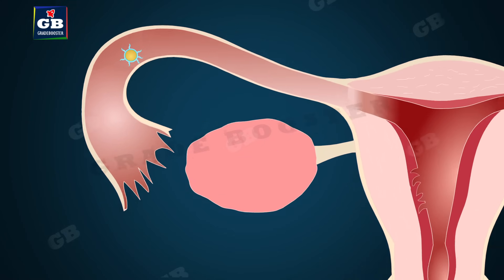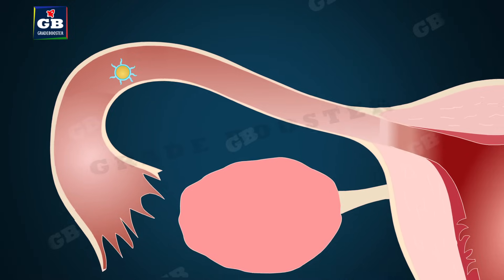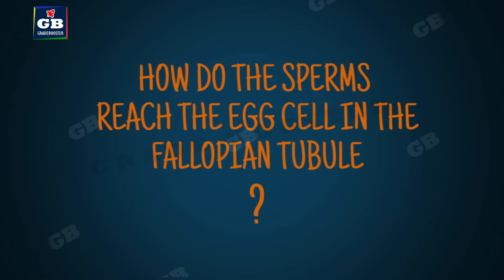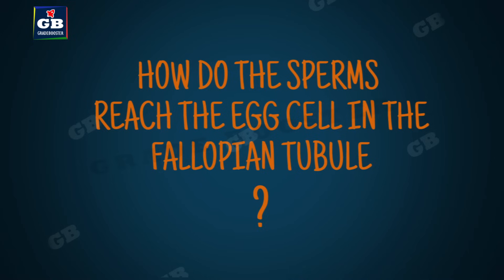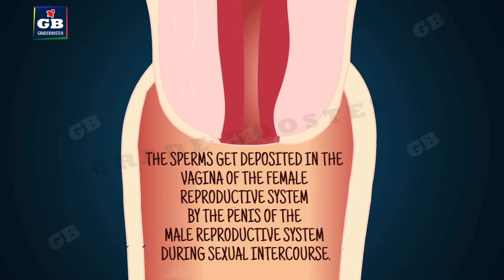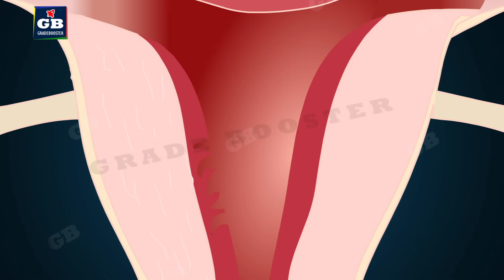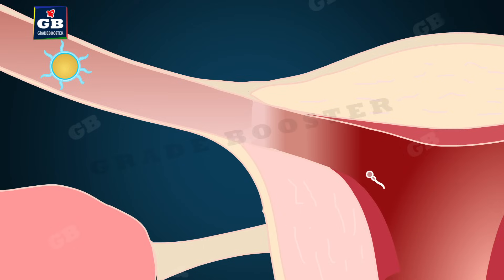The fallopian tube is the place where fertilization takes place by the fusion of sperm and egg cells. The sperms get deposited in the vagina by the penis of the male reproductive system during sexual intercourse, then travel towards the fallopian tube and finally reach and fertilize the egg cell.